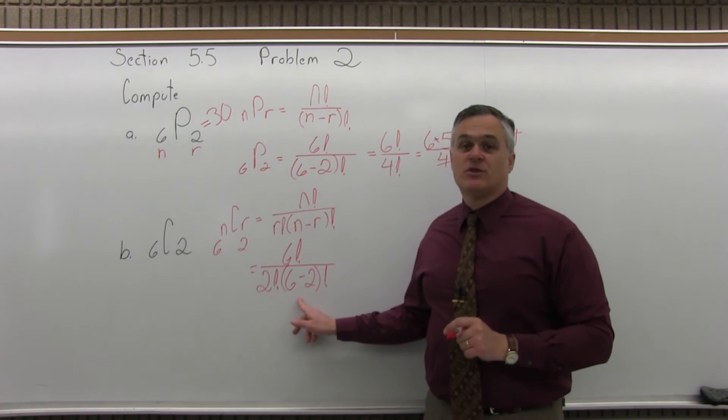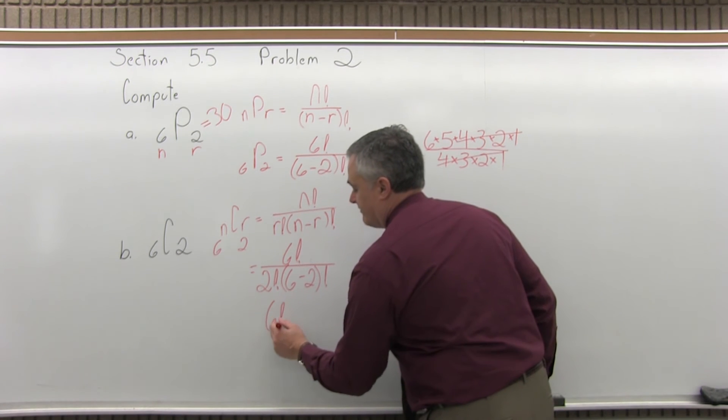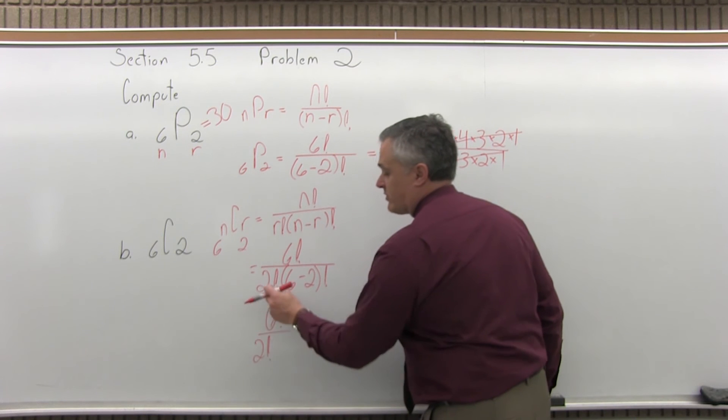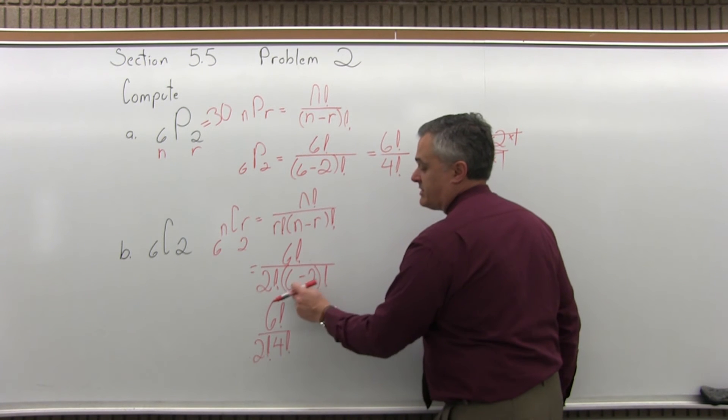So, anytime you have any sort of a math problem, if you have parentheses, you must do the work in parentheses first. So, let me leave the 6 factorial on the top, 2 factorial from the bottom, and it will be multiplied times 4 factorial from the parentheses. 6 minus 2 is 4.